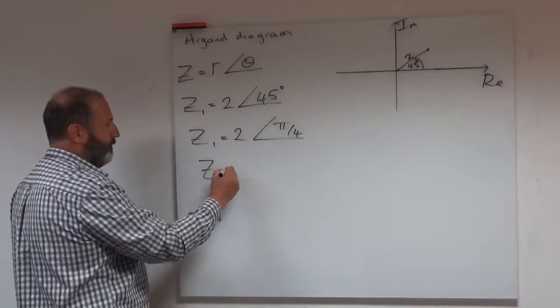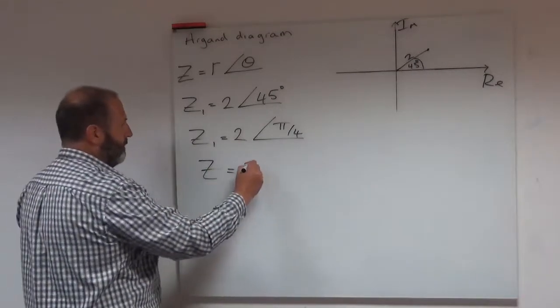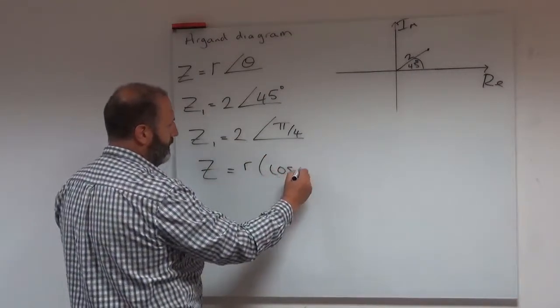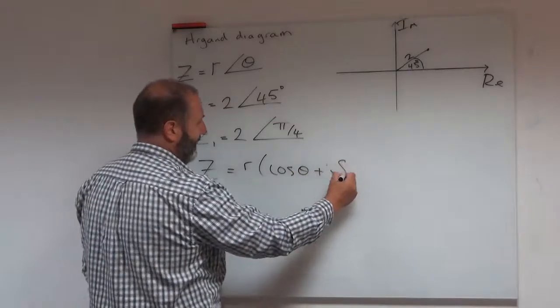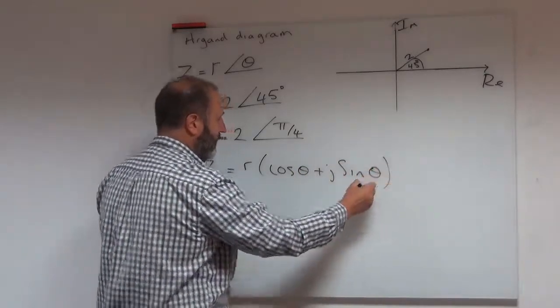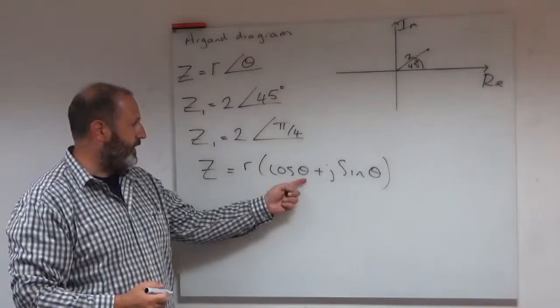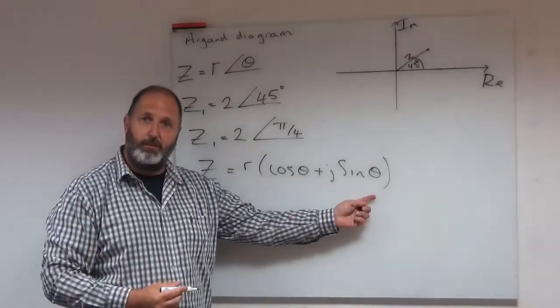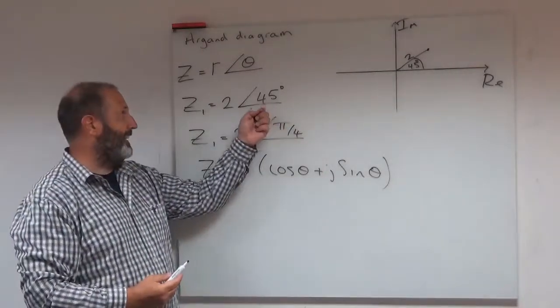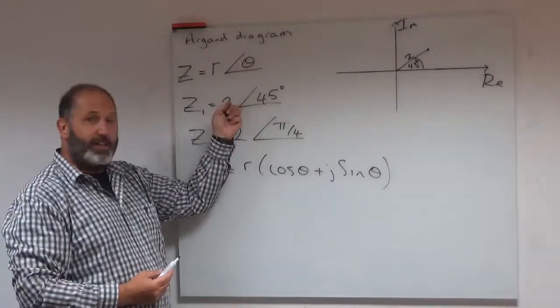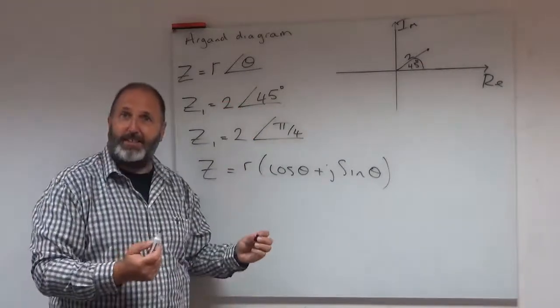It could have been given in a different format. It could look something like this: r, and then in brackets, cosine of theta plus j sine of theta. Now, this looks a little bit more complicated, I think, than this or this. But essentially, it's the same thing.